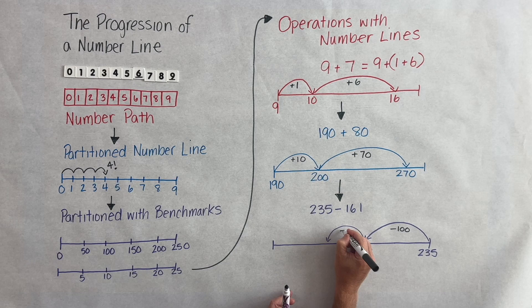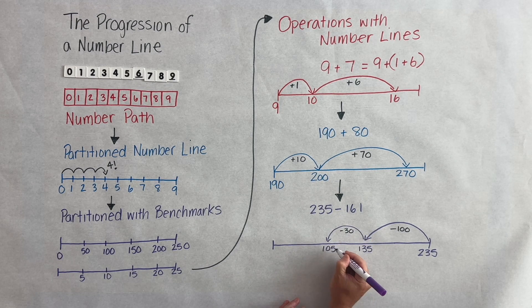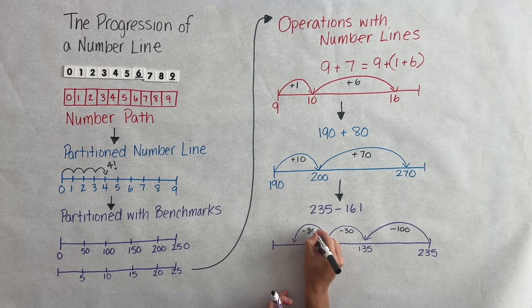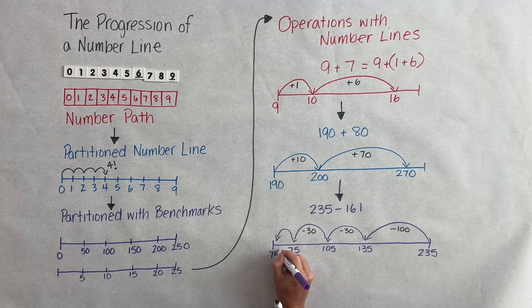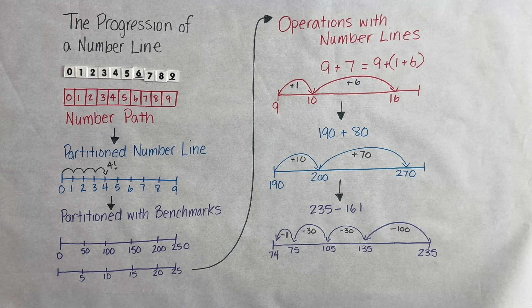Well, our first jump is back 100 which gets us to 135. Then we use 30 from our 60 gets us to 100. Another 30 back gets us to 75 and that one leftover gets us to 74.